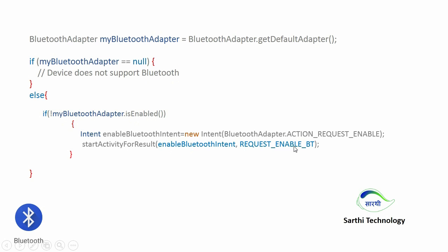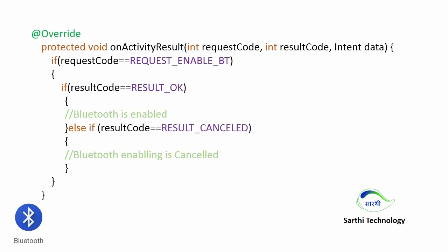Using this code we will enable Bluetooth. One more thing: startActivityForResult() returns the result of the activity, so using that we can get acknowledgement of whether Bluetooth is enabled or not. For that, we will override the onActivityResult() method. Using the request code, we will check if the request code equals REQUEST_ENABLE_BT. If the result code is RESULT_OK, that means Bluetooth is enabled. If the result code is RESULT_CANCELED, that means the user denied the request by pressing the cancel button.